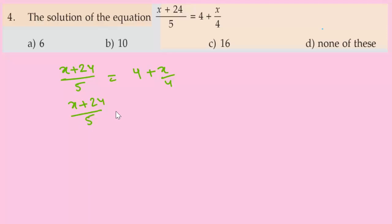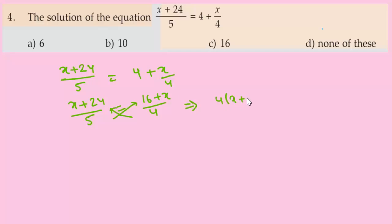Cross multiplying: 4 times (x+24) equals 5 times (16+x), i.e., 4 into x plus 24 is equal to 5 into 16 plus x.